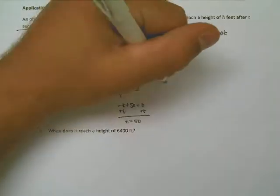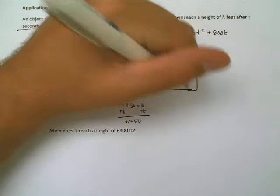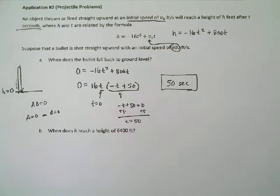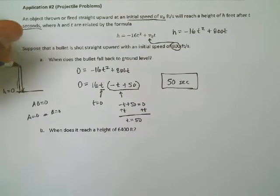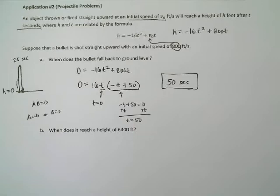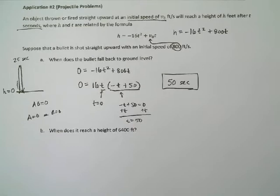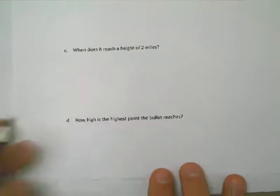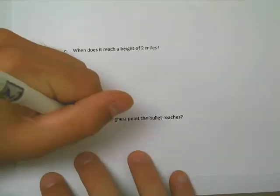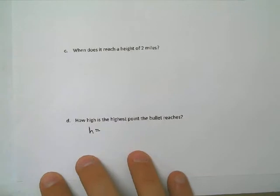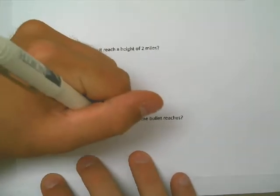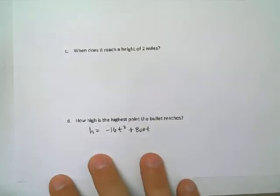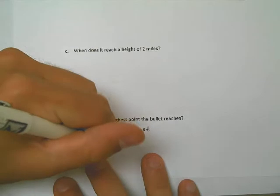How high is the highest point the bullet reaches? Well, here's what I know. 25 seconds has gone by to get to the top because it takes another 25 to fall back down. It's the halfway point. So we can go ahead and skip straight to part d here. How high is the highest point the bullet reaches? Well, I'm solving for the height. And it's governed by this equation, negative 16t squared plus 800t. And in this case, we know it's the halfway point. So h is equal to negative 16 times 25 squared plus 800 times 25.